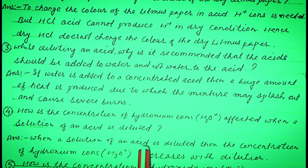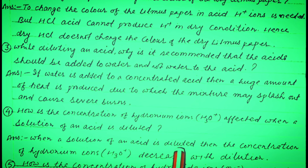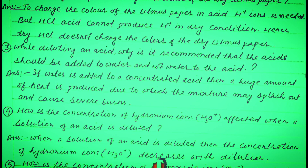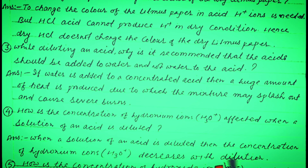जब acid के solution को dilute करते हैं तब उसके अंदर hydronium ions का जो concentration होता है वह decrease करता है। जैसे जैसे उसको हम पतला बनाएंगे वैसे वैसे H₃O⁺ ions का concentration घटता चला जाता है। (When an acid solution is diluted, the concentration of hydronium ions decreases; as we make it more dilute, the H₃O⁺ ion concentration keeps decreasing.)